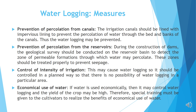Measures against waterlogging. Prevention of percolation from canals: Irrigation canals could be lined with impervious lining to prevent the percolation of water through the bed and banks of the canals, thus preventing waterlogging. Prevention of percolation from reservoirs: During the construction of dams, a geological survey should be conducted on the reservoir basin to detect zones of permeable formations through which water may percolate. Control of intensity of irrigation: This should be controlled in a planned way so that there is no possibility of waterlogging. Economical use of water: If water is used economically, it may control waterlogging and the yield of the crop may be high. Special training must be given to cultivators to realize the benefits of economical water use.